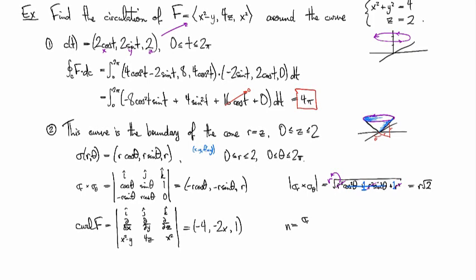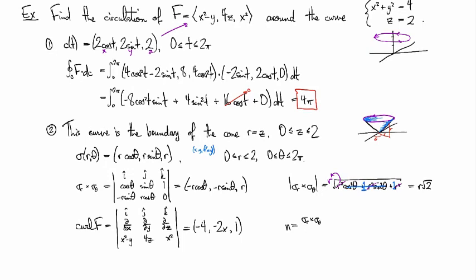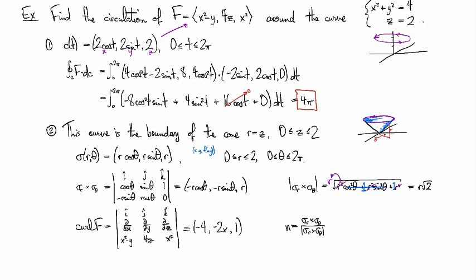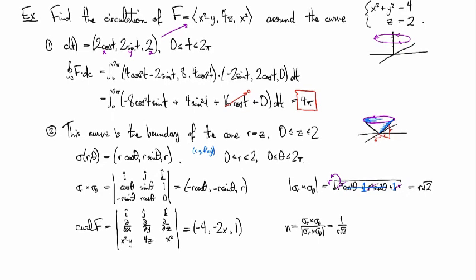So we've got R derivative cross theta derivative over magnitude of same. So that's going to be 1/(R√2),